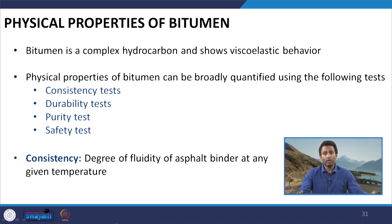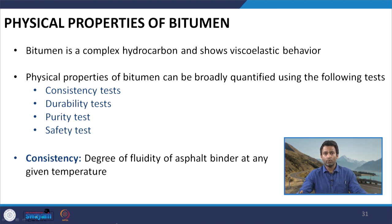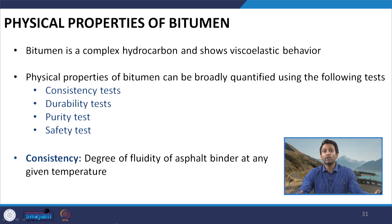For pavement and road engineering applications, there are various temperatures we are interested in. If we consider how bitumen is exposed to different temperatures during its in-service period, in the hot mix plant the bitumen is exposed to very high temperatures when mixed with hot aggregates. The mixing temperature approximately ranges from 150°C to 170°C.